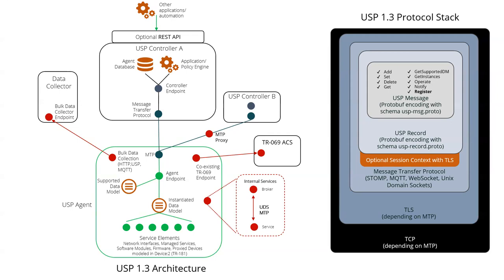Here's how the underlying technology looks. On the left you have the internal architecture — a controller with that optional REST API, all the things a controller might have, and multiple controllers working together. There's the optional out-of-band data collector on the left-hand side doing different protocols, set up via USP but then communicated to the data collector. You also see the coexistence with TR69 ACS and how it fits into the TR181 data model. There's also the concept of internal services, where there is a USP broker — acting as a controller communicating with the internal agent and a USP service — communicating over a UNIX domain socket internal to the underlying system.